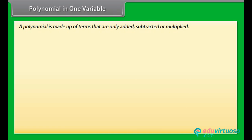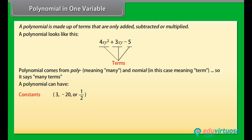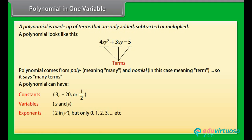A polynomial is made up of terms that are only added, subtracted, or multiplied. A polynomial looks like this. The word 'polynomial' comes from 'poly' meaning many, and 'nominal' meaning term — so it says 'many terms.' A polynomial can have constants like 3, minus 20, or 1/2; variables like x and y; and exponents like the 2 in y squared.